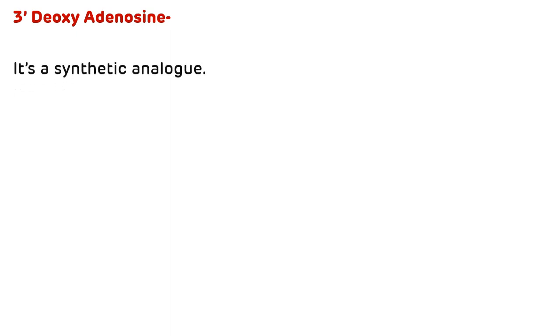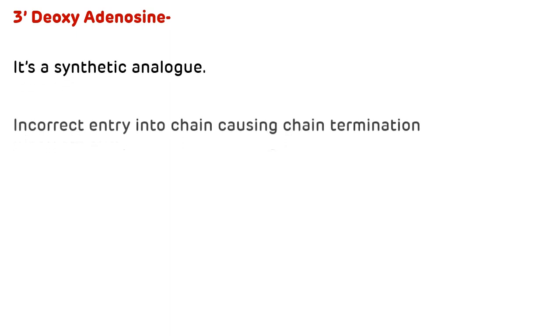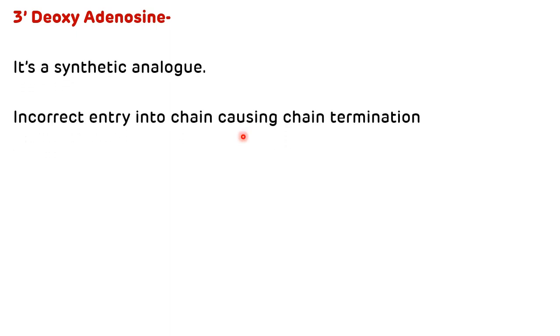The last example of an inhibitor of transcription is 3'-deoxyadenosine. It is a synthetic analog and causes incorrect entry into the chain, causing chain termination.